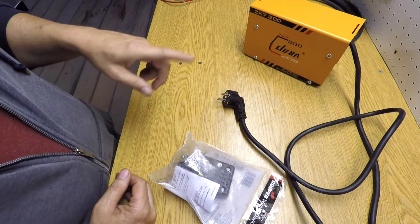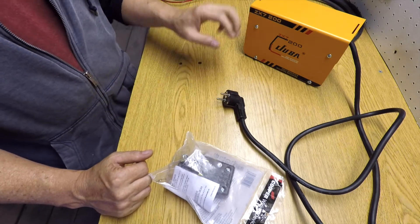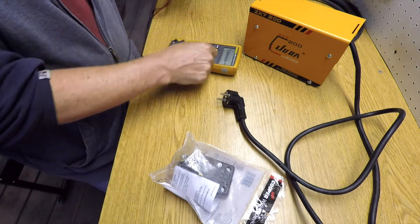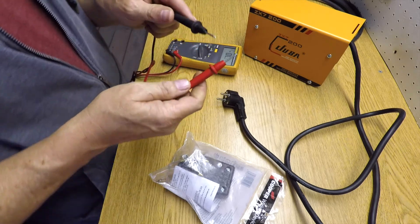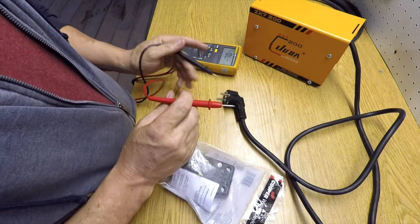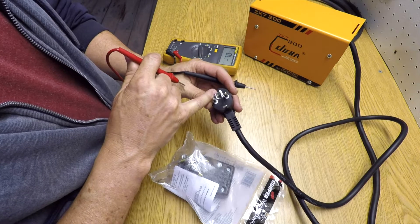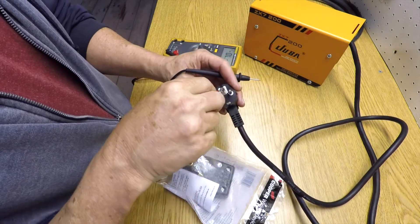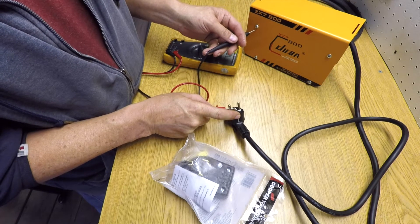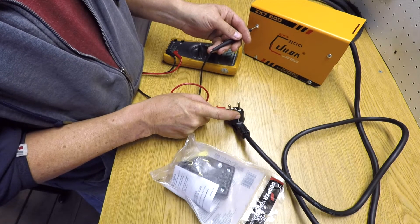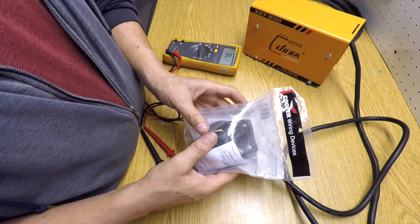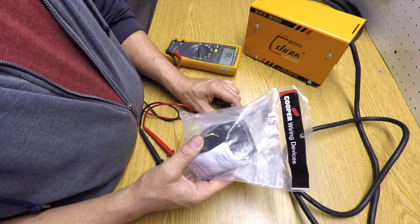The first thing I want to do is test and see if this is grounded on the inside. I just put it on continuity and if I have a connection you can hear that beep. I checked what I believe is the negative ground on this plug with the outside of the case, and it is grounded, which is good because there's three wires involved in a 240 volt plug: two hot wires and a ground.